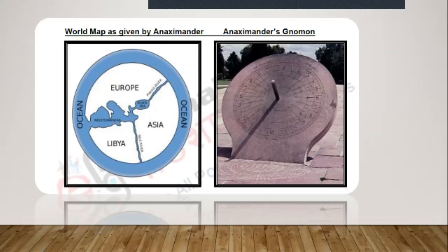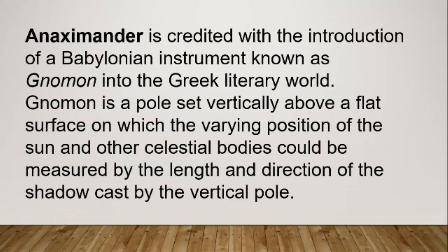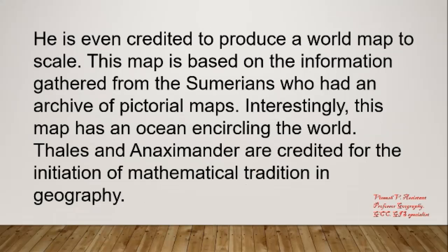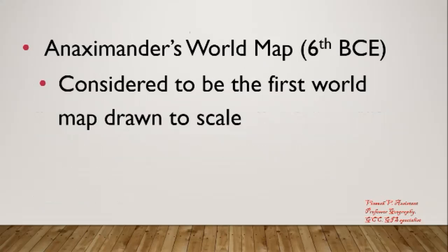Here is the picture of the gnomon — you can see it. That is what he used to observe movement. He is even credited to produce a world map drawn to scale. This map was based on information gathered from the Sumerians, who had an archive of pictorial maps. Interestingly, this map has an ocean encircling the world. Thales and Anaximander are credited for the initiation of the mathematical tradition in geography — these two people introduced mathematical formulas for studying about the earth.